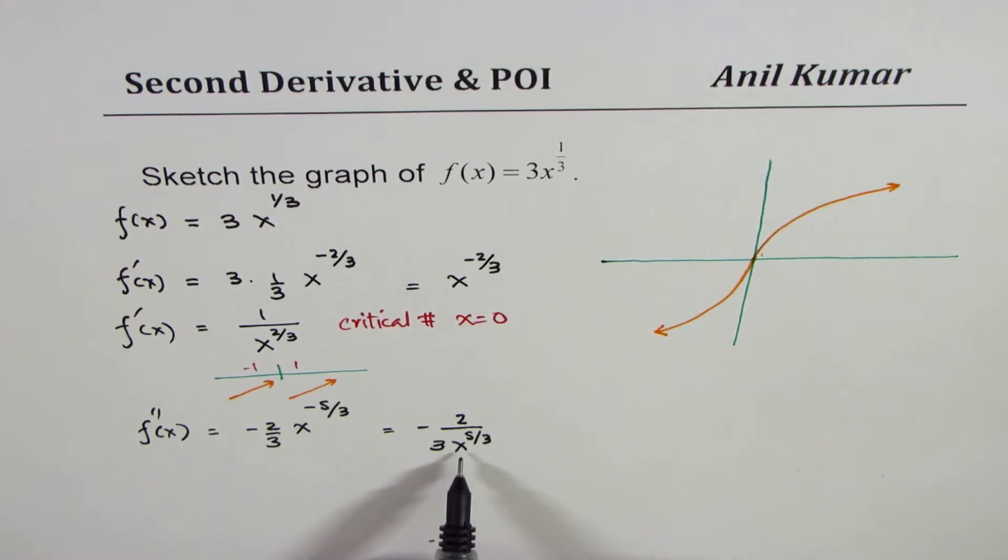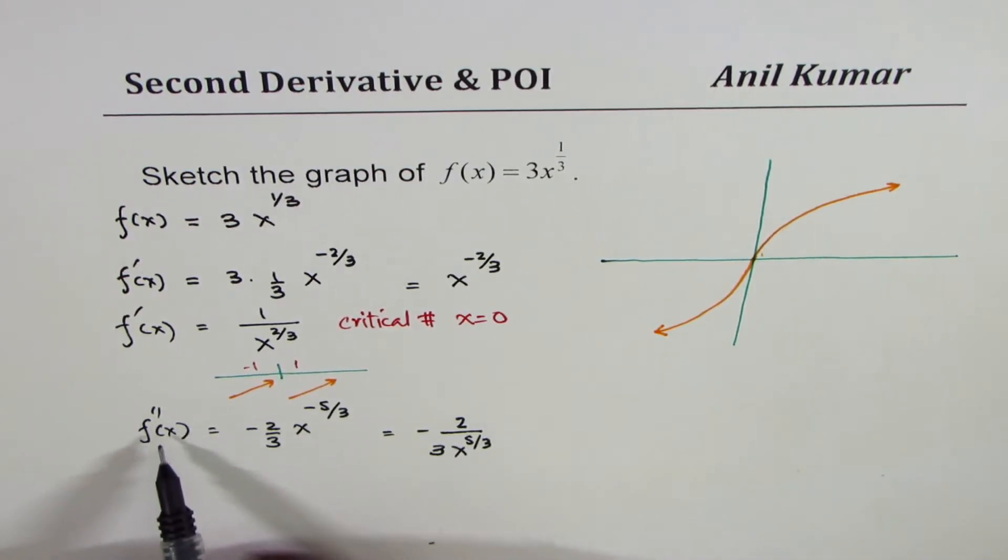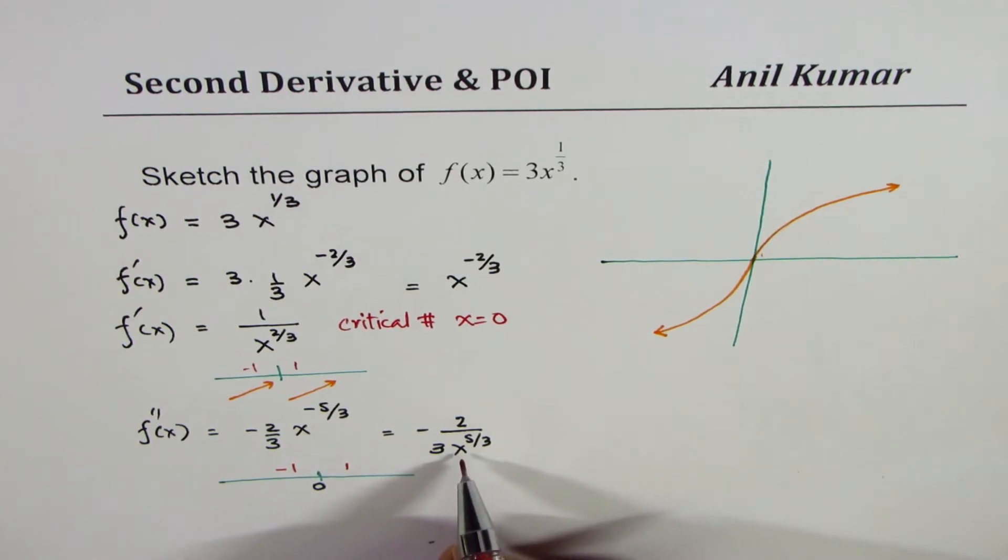Now, here at x equals to 0, we do get the second derivative as undefined. So let's analyze this second derivative. At x equals to 0, if I take a point which is, let us say, negative 1, let's take negative 1 and positive 1, easy to calculate.